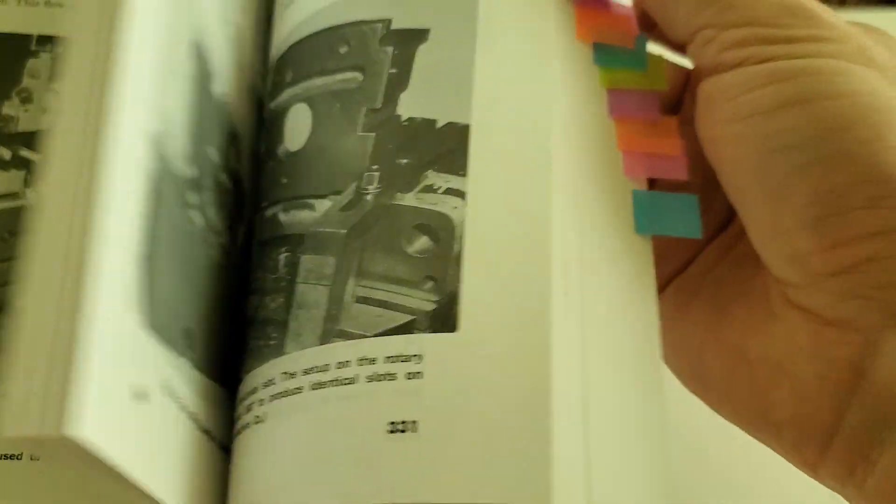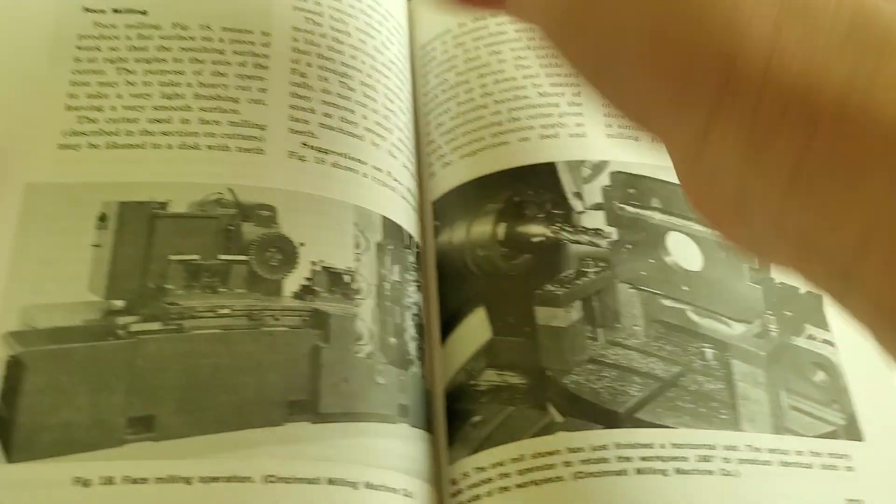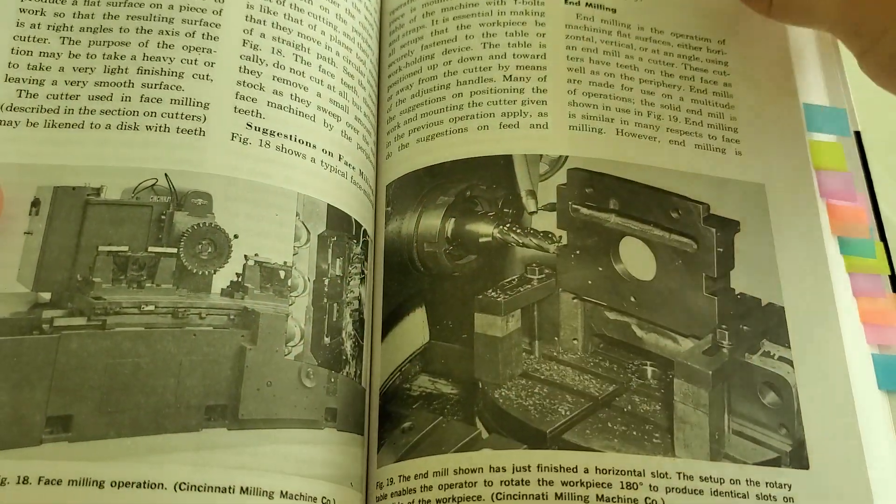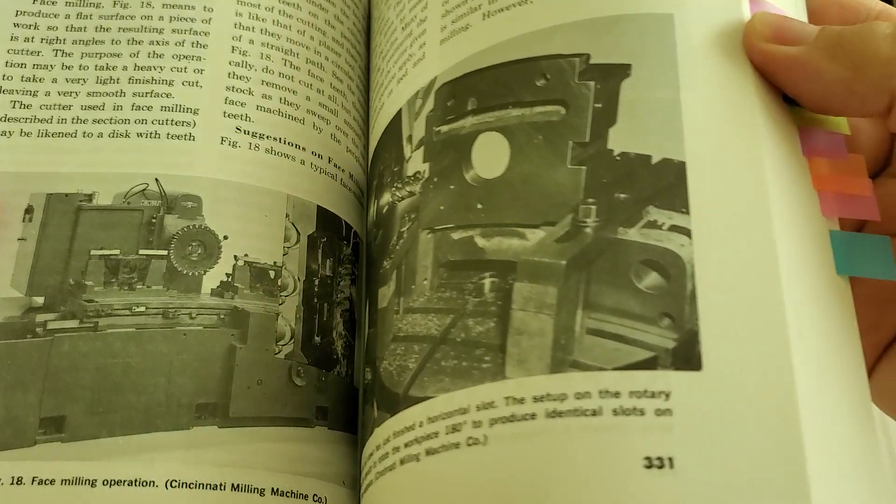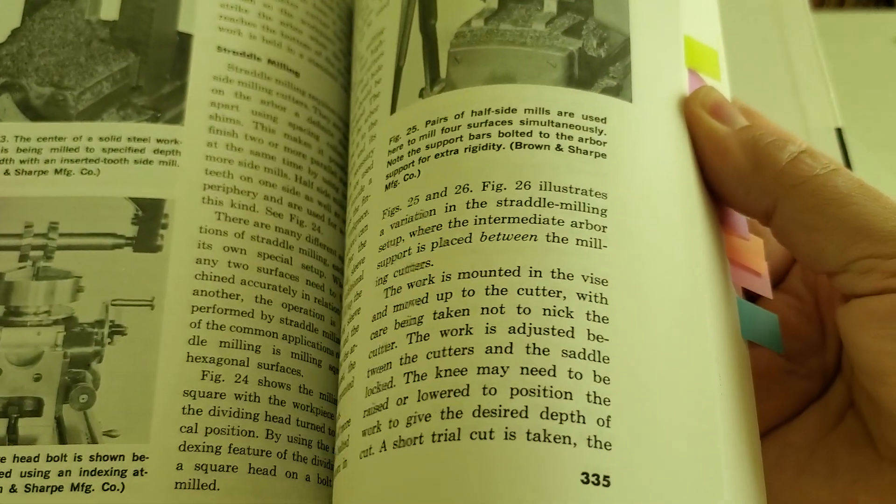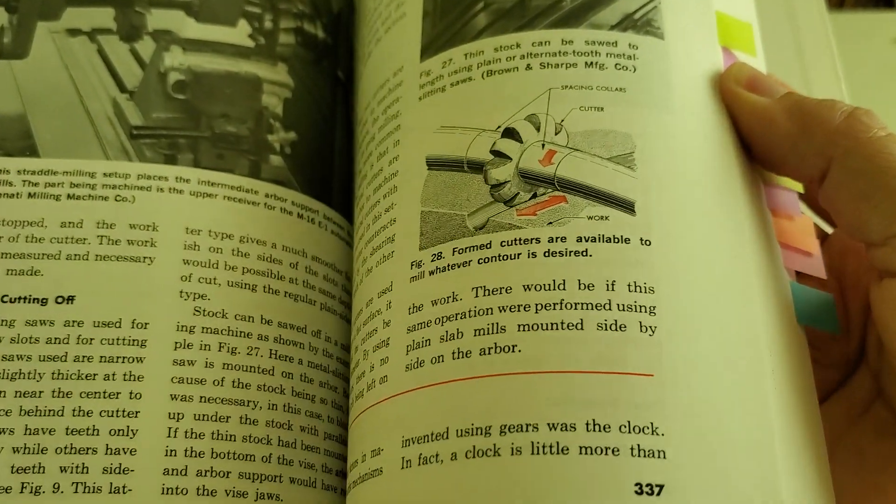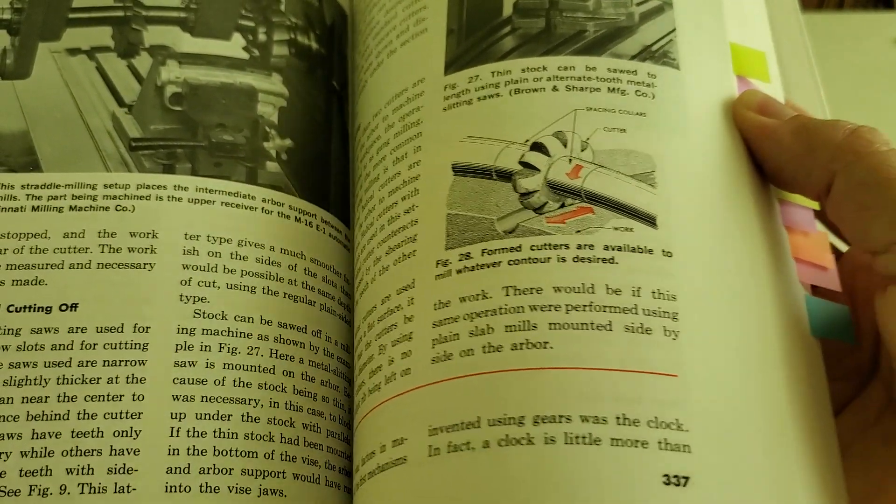The section on the milling machine, likewise, they have the anatomy and all that stuff. Then it goes into all the different types of operations you can do there. And it covers horizontals and verticals, covers dividing, tons of setup pics, as you can see.